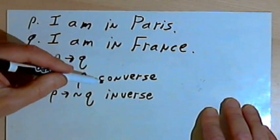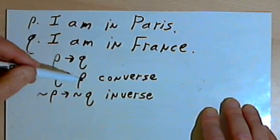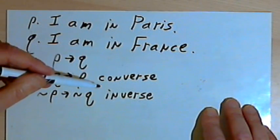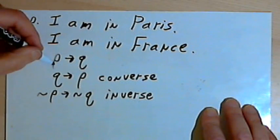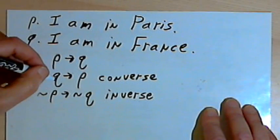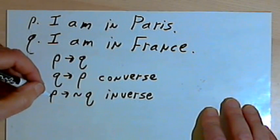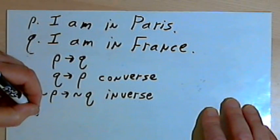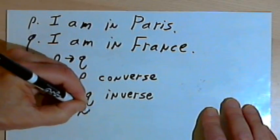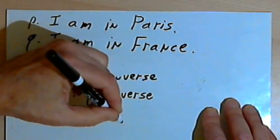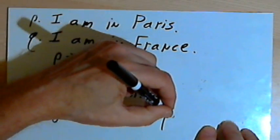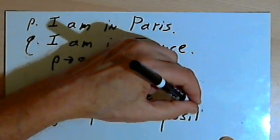So for both the converse and the inverse, it's not necessarily true that they are true, just because the original conditional statement was true. Now there's another way I could combine them. I could both rearrange the letters and I could negate them. So I could say, if not Q, then not P. This is called a contrapositive.